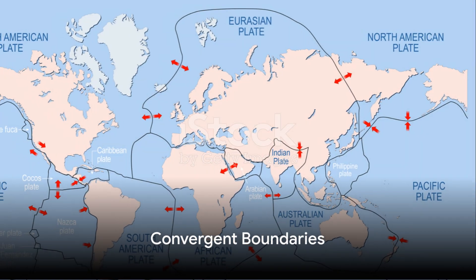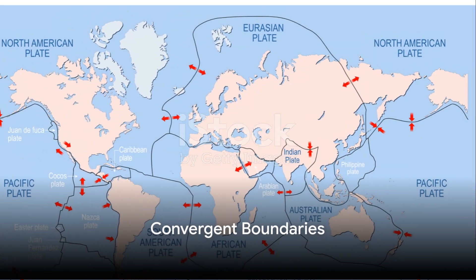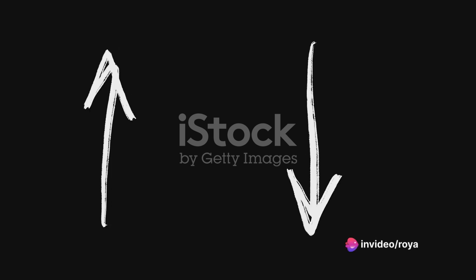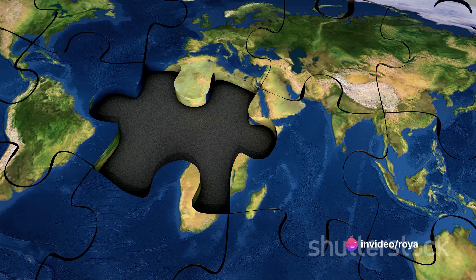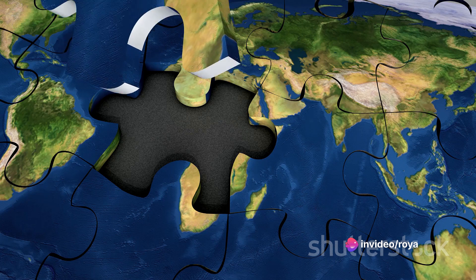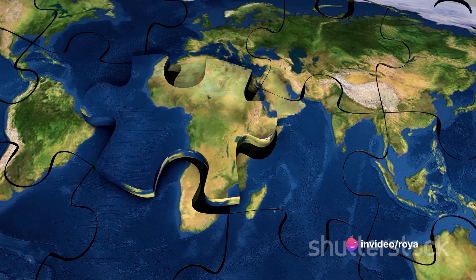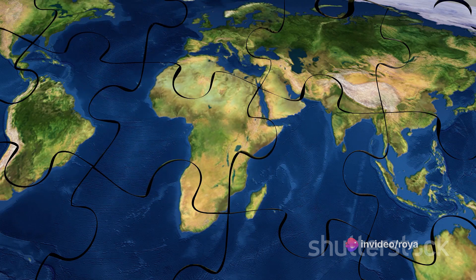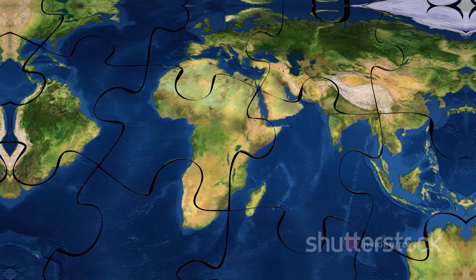First, let's delve into the realm of convergent boundaries. These occur when two plates move towards each other, colliding in a slow-motion battle of epic geological proportions. But not all convergent boundaries are created equal.